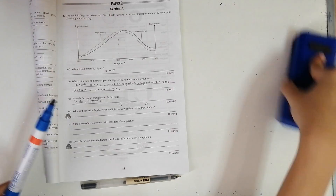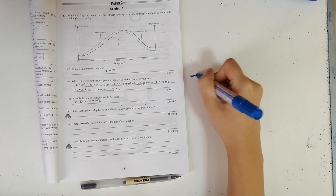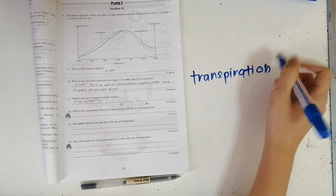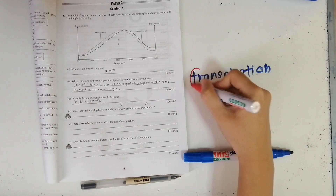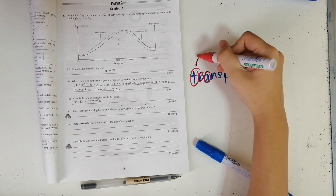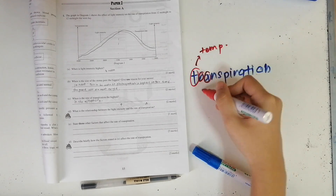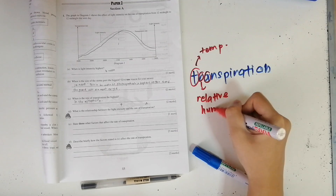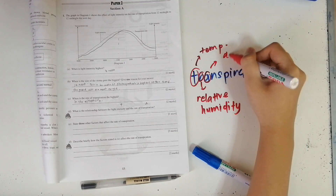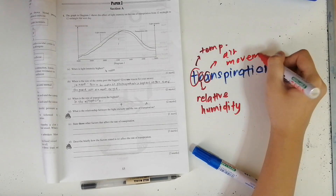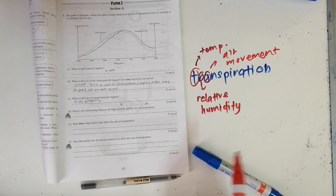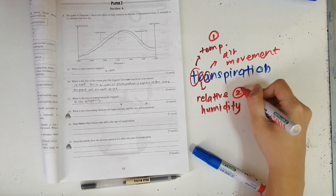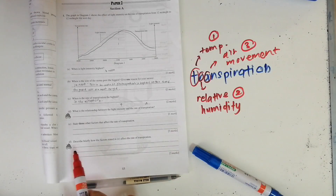State three other factors that affect the rate of transpiration. A way to remember is to write the word transpiration and use the first three letters — T, R, A. T is temperature, R is relative humidity, and A is air movement. This way you'll never forget the factors affecting the rate of transpiration.